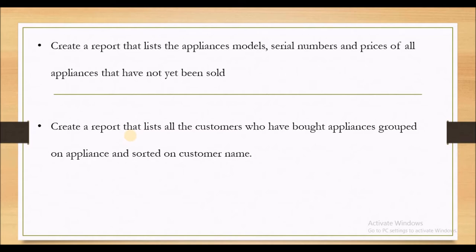Our first report is to list the appliances, models, serial numbers, and prices of all the appliances that have not been sold. And the second report is to create a list of the customers who have bought appliances, and we need to group it by appliances and sort it by customer name. So let's head over to Microsoft Access.